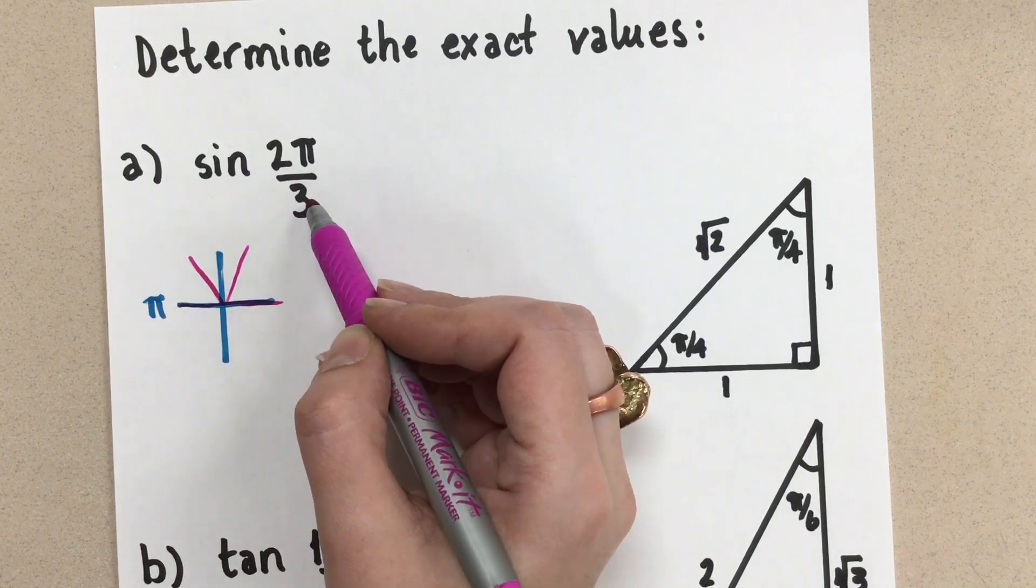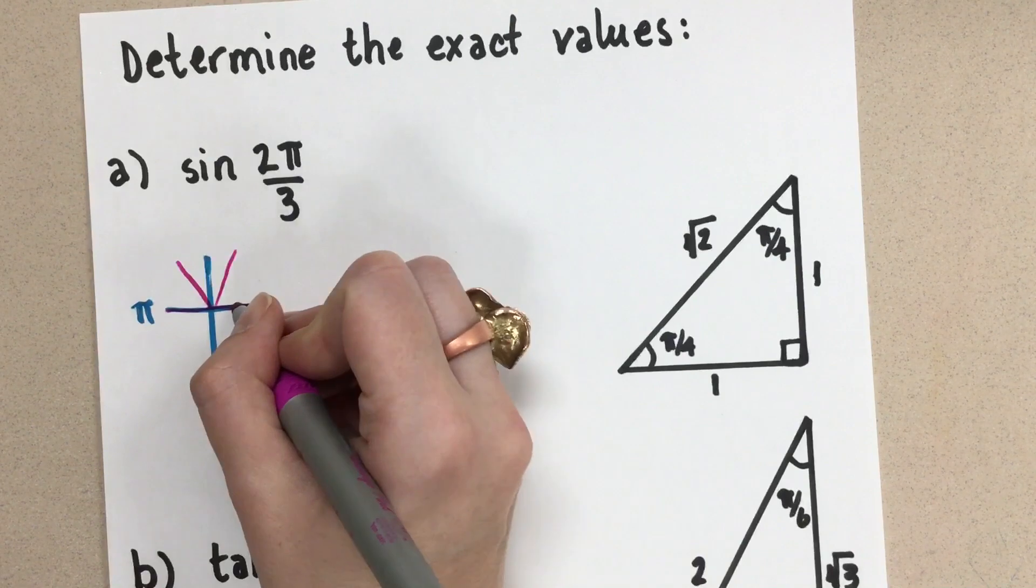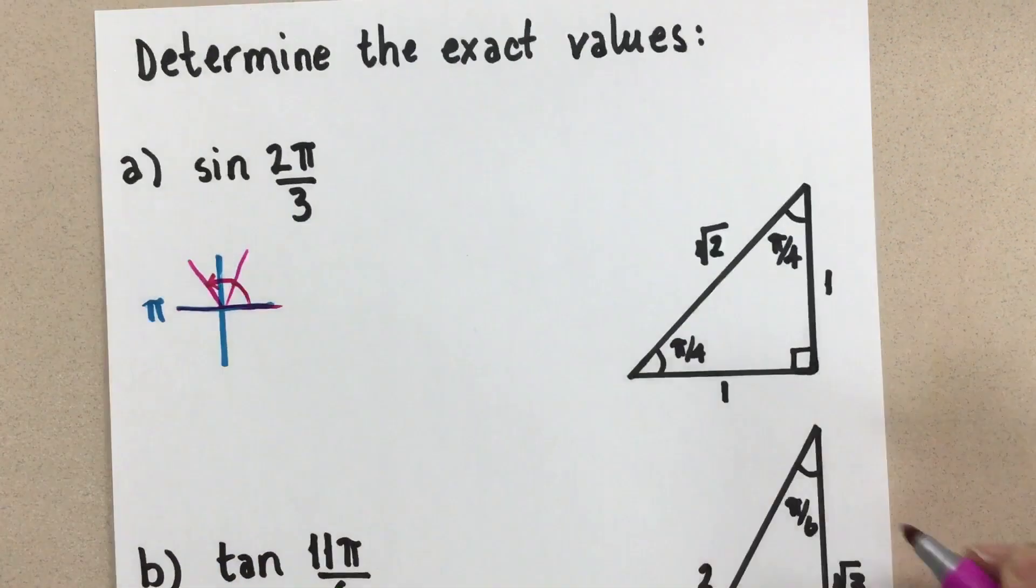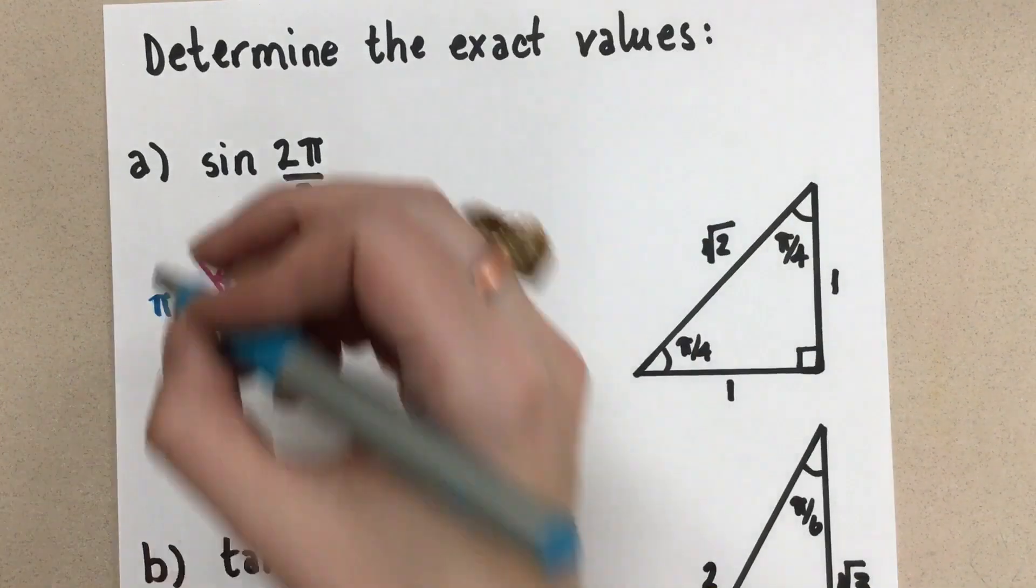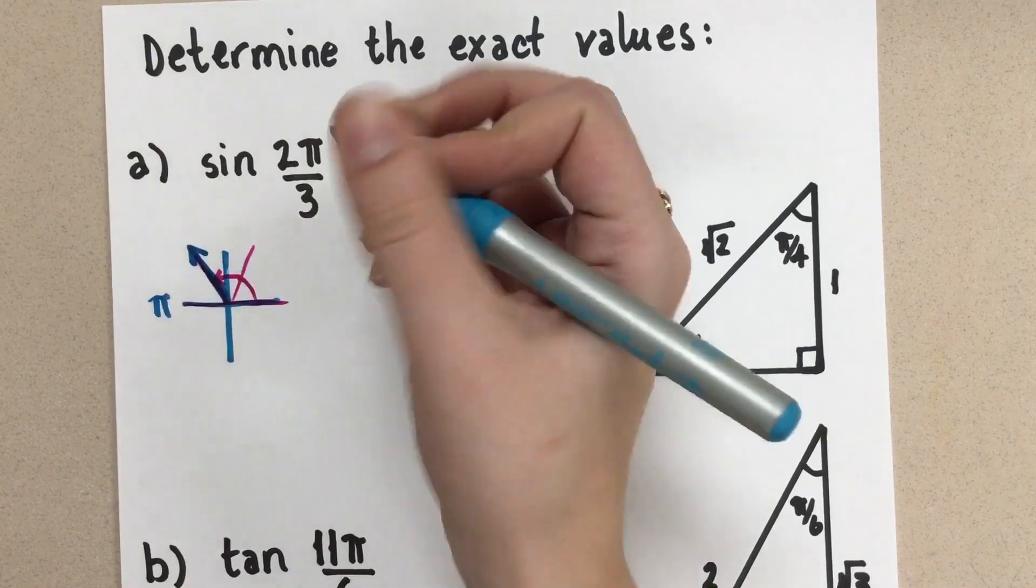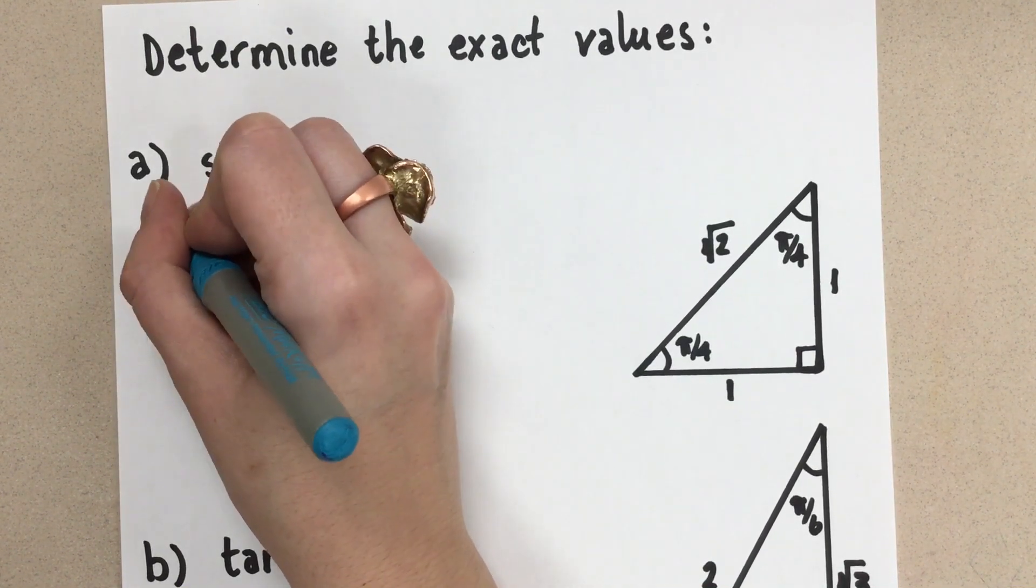So 2 thirds of a π is going to be 1, 2 thirds of that π radians. So here is the terminal arm of our angle, 2π over 3.